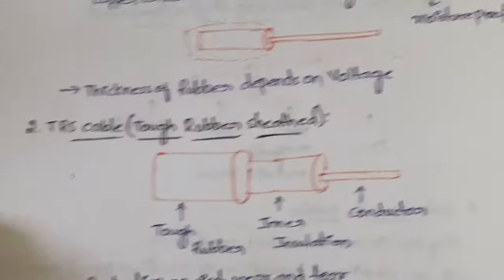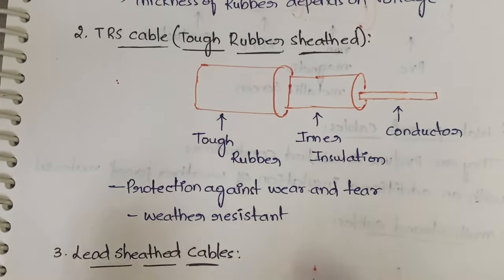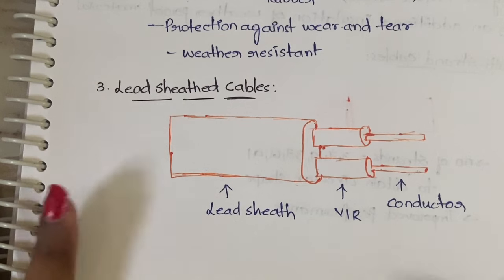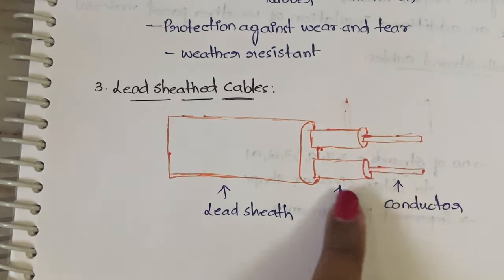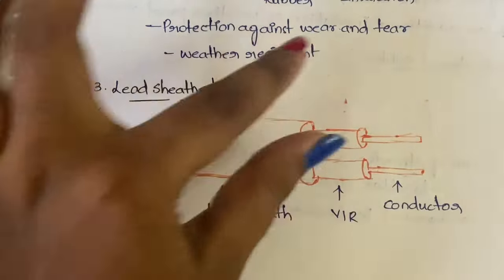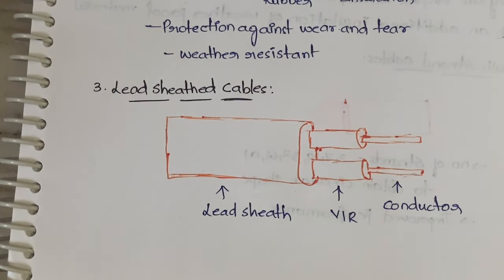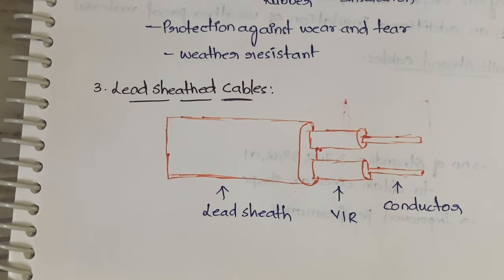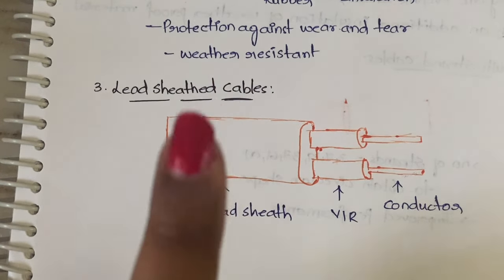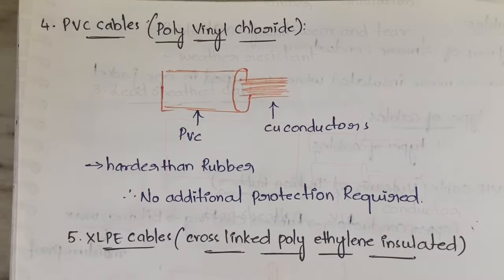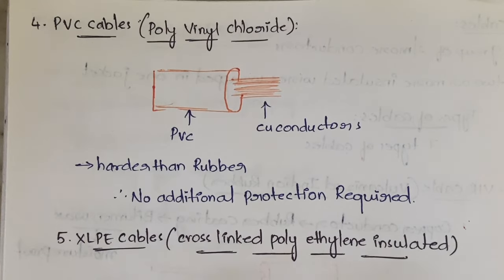The third type is lead sheathed cable. In this cable, the conductors are coated with Vulcanized Indian Rubber, and then all of them together are coated with a lead sheath. This lead sheath protects the cable from moisture and from mechanical injury. Instead of bitumen wax used in VIR cables, lead sheath is used here for that protection.